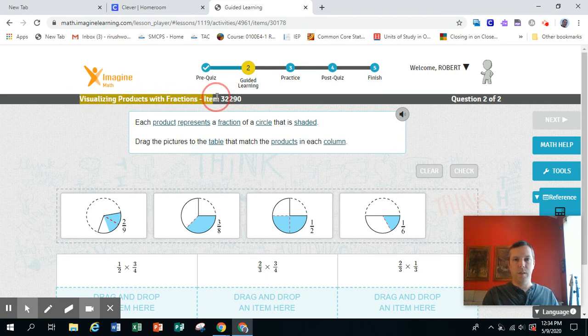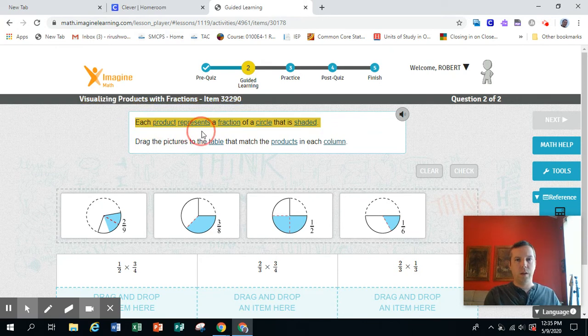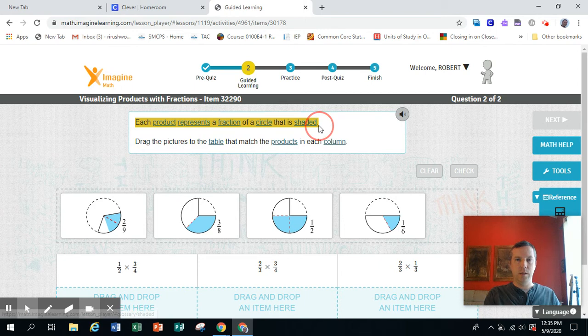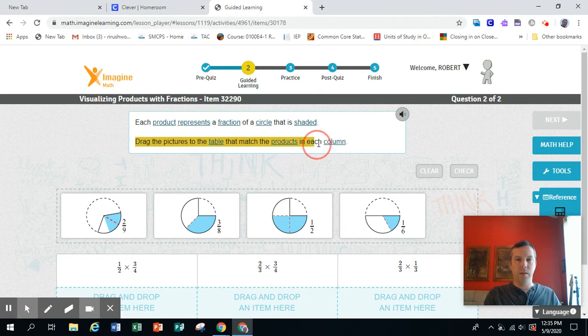Visualizing products with fractions, item 32290. Each product represents a fraction of a circle that is shaded. Drag the pictures to the table that match the products in each column.